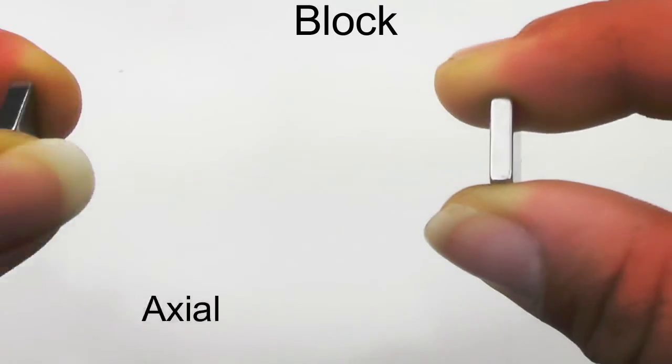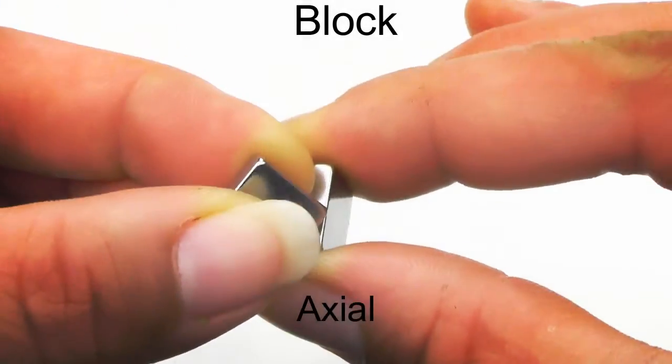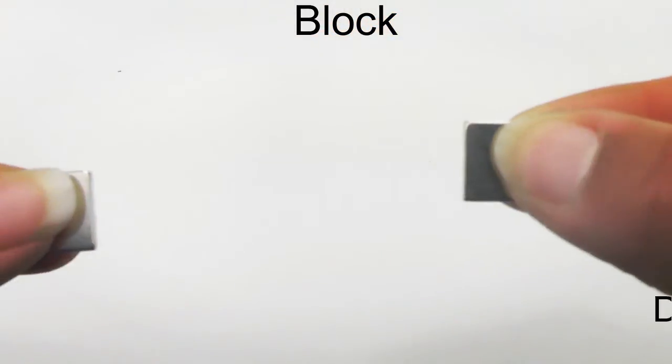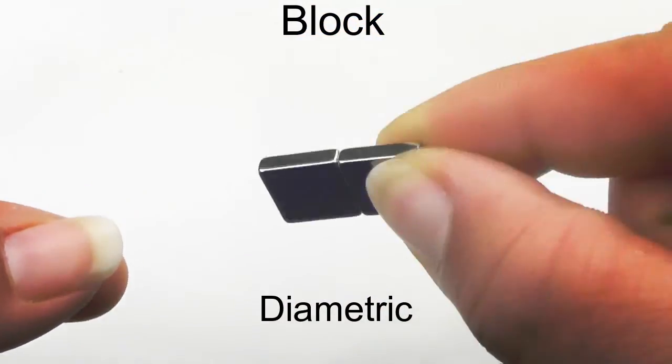Axial block magnets are attracted to their largest flat surface. Diametric block magnets are attracted to one of their smaller flat edges.